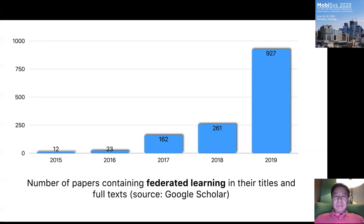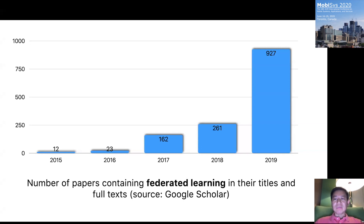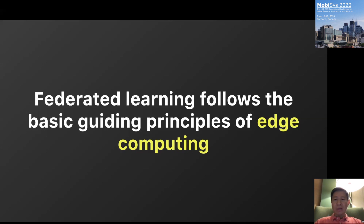The number of papers published in federated learning has accelerated in strength and growth over the past several years, especially between 2018 and 2019. It has become an especially hot area of research starting from 2019, and 2020 will most likely be even more emphasized in the research community. This is mostly because federated learning sits at the intersection of mobile computing and machine learning.